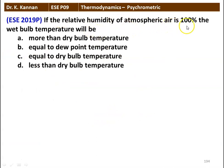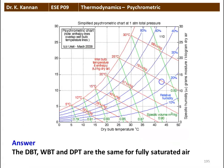When the relative humidity of atmospheric air is 100%, the wet bulb temperature will be — more than dry bulb temperature, equal to dew point temperature, equal to dry bulb temperature, or less than dry bulb temperature. The correct answer is: equal to dew point temperature and equal to dry bulb temperature. For fully saturated air, the red color line on the psychrometric chart shows that dry bulb, wet bulb, and dew point temperatures are all equal.